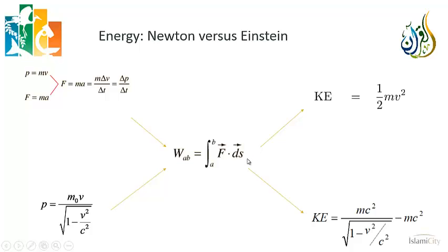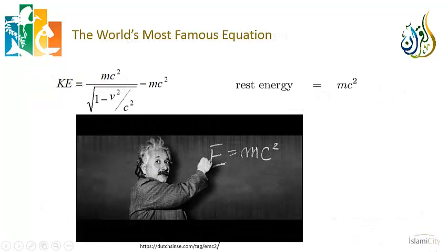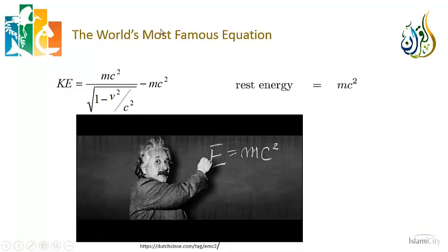According to Einstein, the laws of physics must be exactly the same: work is still force integrated over path, and force is still defined as the rate of change of momentum. But according to special relativity, momentum is given by the relativistic expression — not simply mv. When we substitute this expression for momentum and compute the rate of change as force, we get a new expression for kinetic energy: mc² divided by the square root of 1 minus v²/c², minus mc².